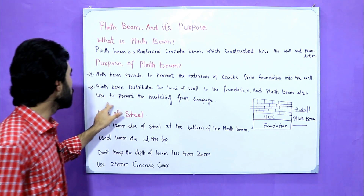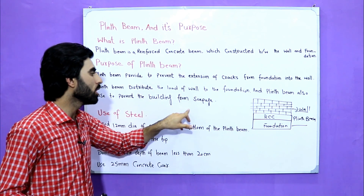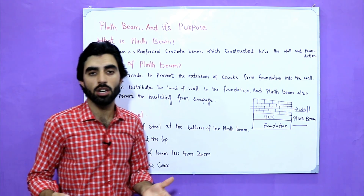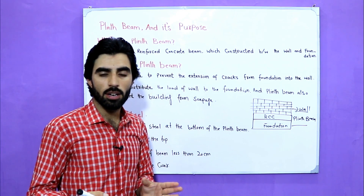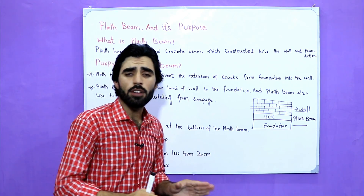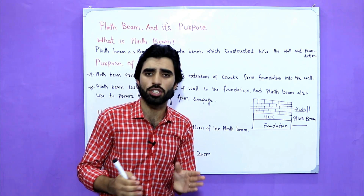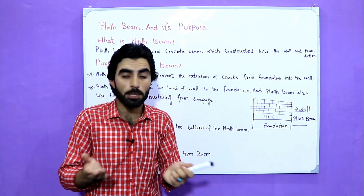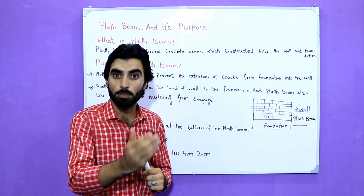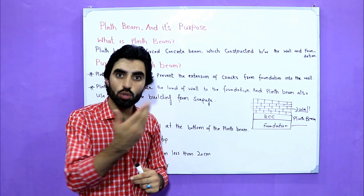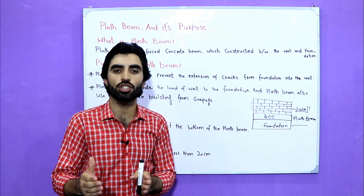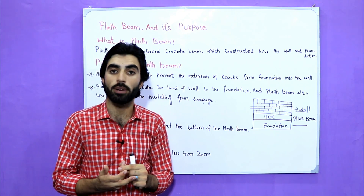Plinth beam is also used to prevent the building from seepage. In every foundation there is the presence of water, so it makes the wall safe from seepage. In many constructions, you can see white powder on the wall which is called efflorescence. That efflorescence comes from seepage, and seepage comes from the foundation. So if you provide plinth beam, you will be safe from seepage and also from cracks.